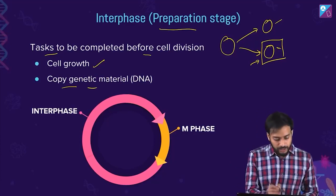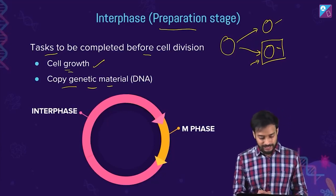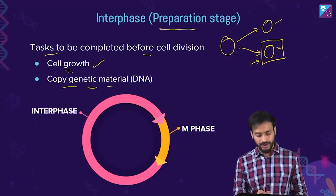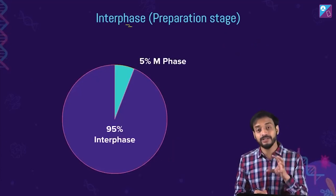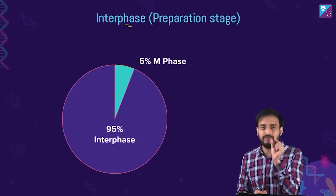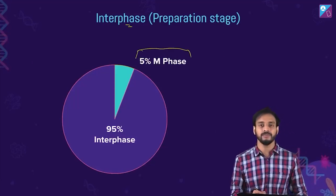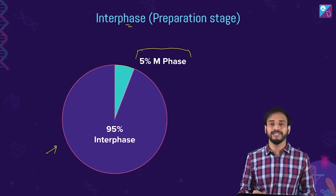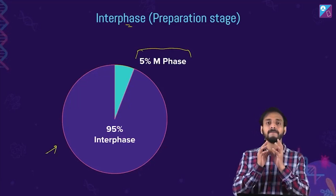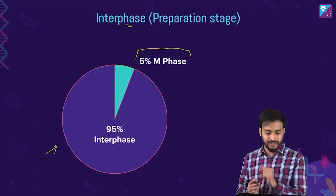The essential steps in interphase are cell growth and copying of the DNA. Now, interphase occupies 95 percent of the cell cycle. The actual division — the M phase — occupies only five percent. So the cell spends the maximum time preparing for division, and the division phase itself is just five percent of the cell cycle.